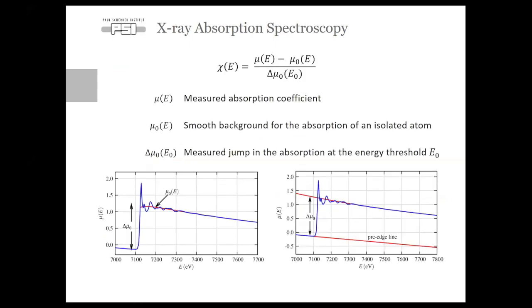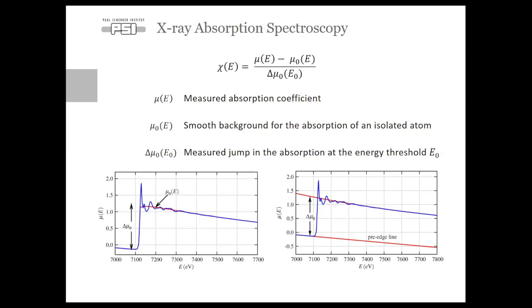So XAS provides us this element specificity, giving us two regions. One region is the XANES, which is a near edge region, and the other is the extended region after the edge. Now the near edge region provides a lot of information on the electronic state of an element during operando measurement, whereas the EXAFS region, we can Fourier transform and get information on the local coordination geometry of the material.